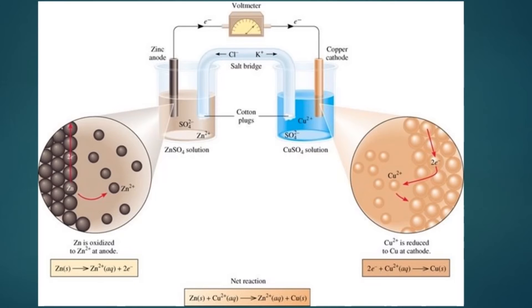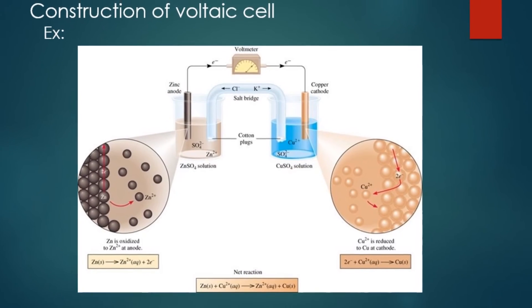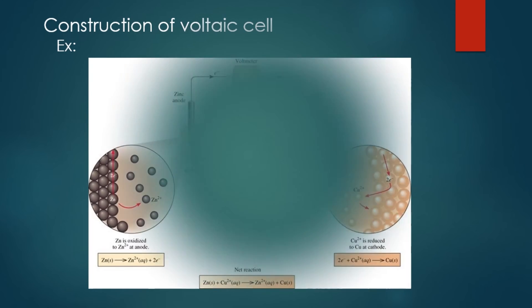In the oxidation half cell, zinc is oxidized and loses two electrons. And in the reduction half cell, Cu²⁺ ion gains two electrons and is deposited on the copper rod.